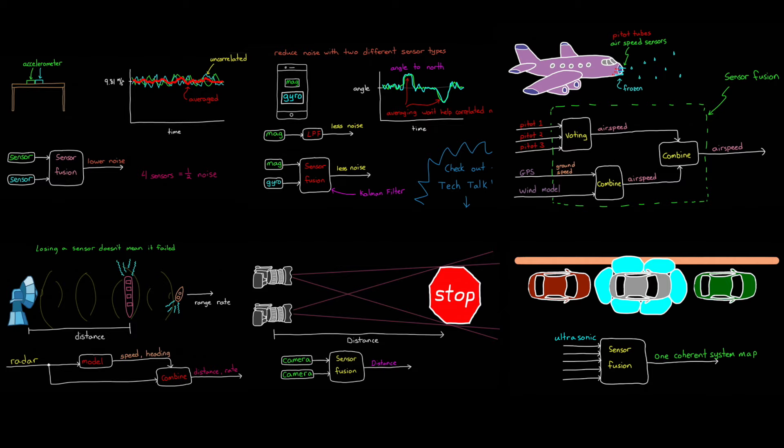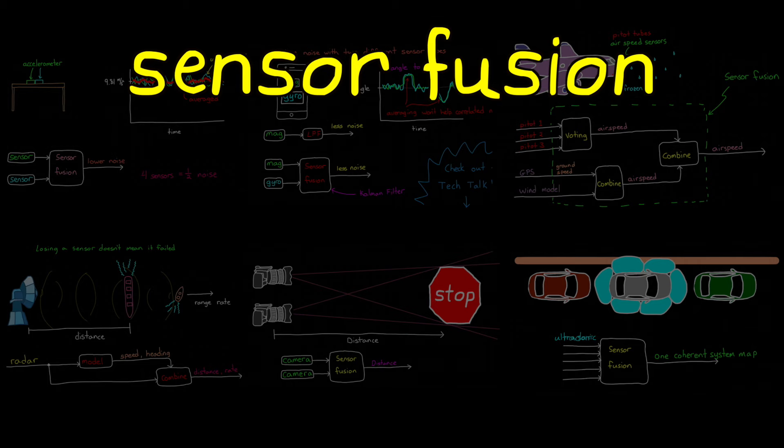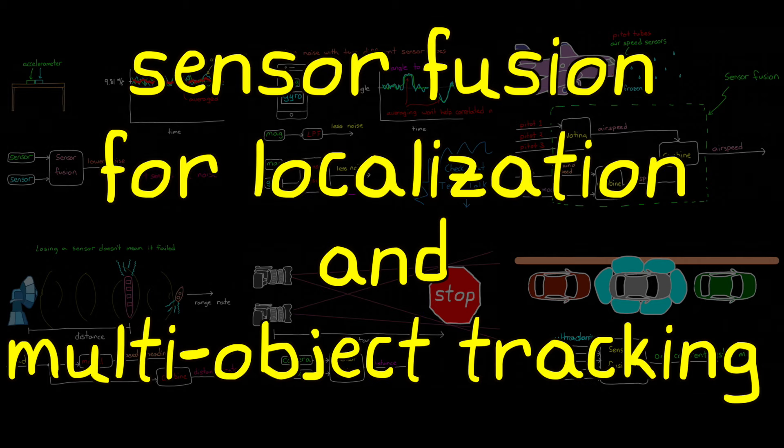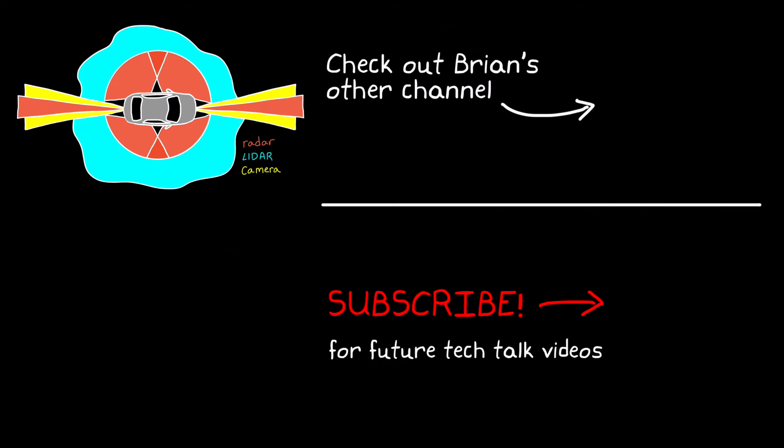In the next two videos, we're going to go into more detail on sensor fusion for localization and for multi-object tracking. In the next video in particular, we're going to show how we can combine an accelerometer, magnetometer, and a gyro to estimate orientation. So if you don't want to miss that and future Tech Talk videos, don't forget to subscribe to this channel. Also, if you want to check out my channel, Control System Lectures, I cover more control theory topics there as well. I'll see you next time.